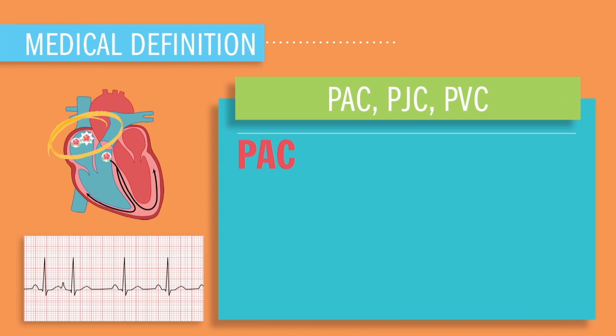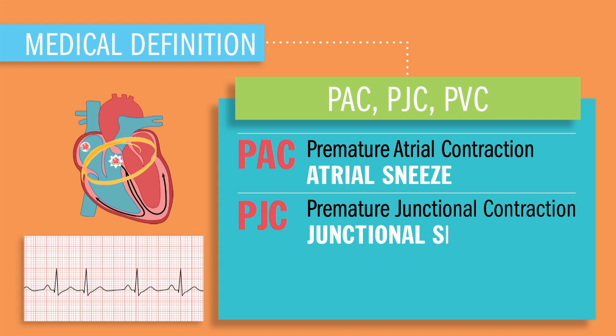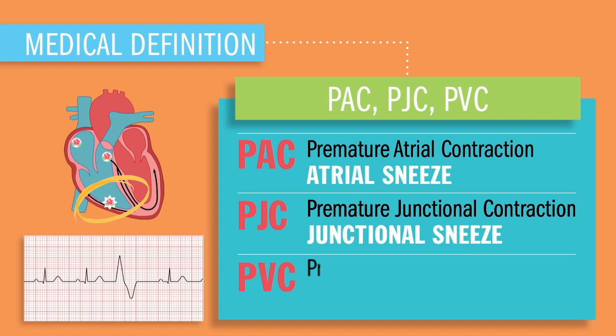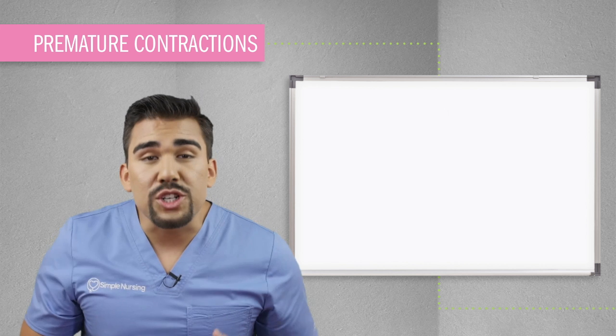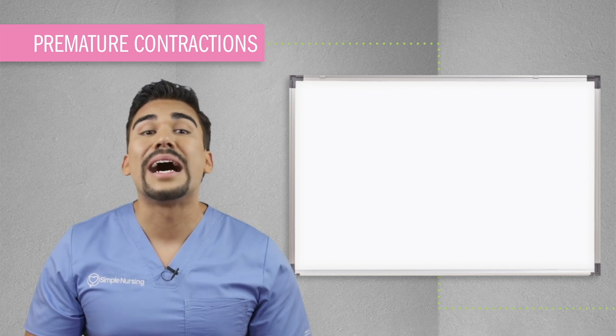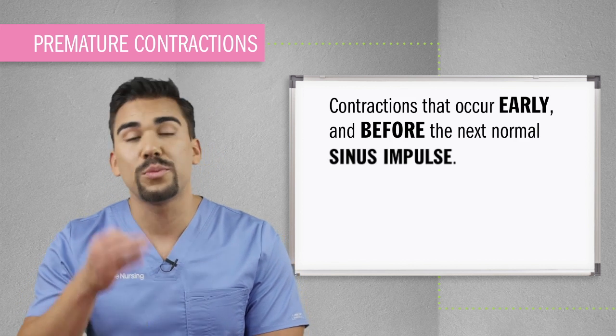Hey guys, Mike Linares here, and welcome to SimpleNursing.com. Today we're wrapping up premature contractions — basically what happens when the heart sneezes. The PAC is a premature atrial contraction, basically just an atrial sneeze. The PJC is a premature junctional contraction, which is just a junctional sneeze. And a PVC is the premature ventricular contraction — a ventricular squeeze. These premature contractions are also called complexes, and are contractions that occur early and before the next normal impulse.